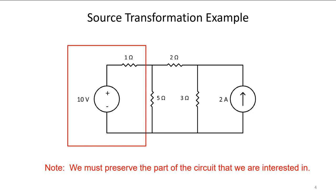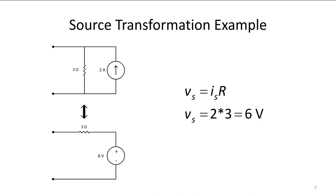We're going to start on the right and take the two amp source and the three ohm resistor and transform it into a voltage source and resistor in series. Our two amp source and three ohm resistor in parallel can be changed to a six volt source and three ohms in series.